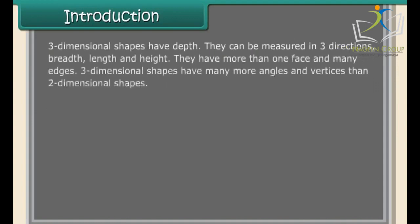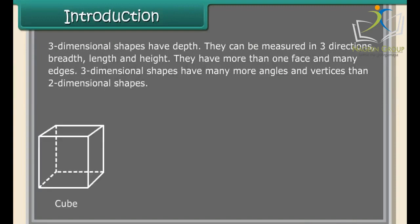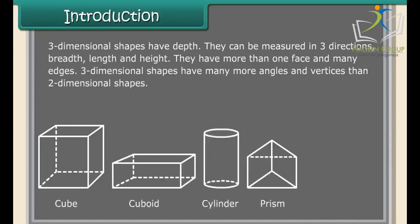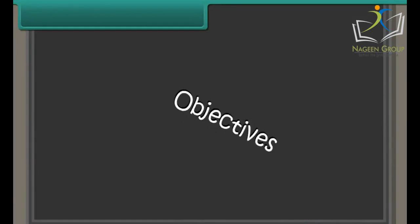Three-dimensional shapes have depth. They can be measured in three directions: breadth, length, and height. They have more than one face and many edges. Three-dimensional shapes have many more angles and vertices than two-dimensional shapes, such as cube, cuboid, cylinder, prism, pyramid, etc.